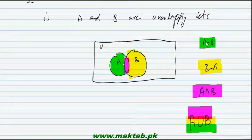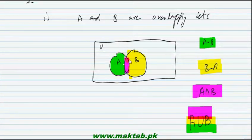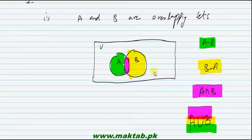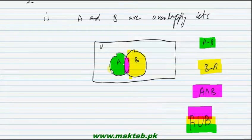Only the green region shows A minus B — the region that is in A but not in B. The pink part is common to both A and B, so we removed it. Similarly, yellow shows B minus A, and pink shows intersection — the common region. Together, all three colors make A union B.